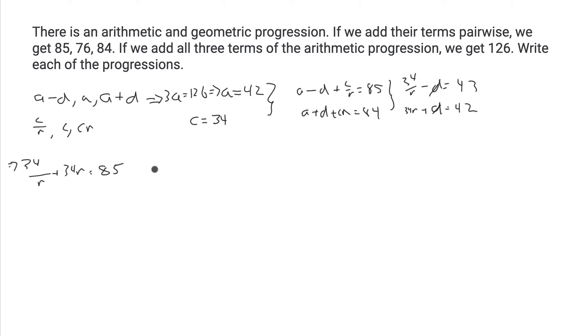You can multiply by r and rearrange to get 34r squared minus 85r plus 34 equals 0. Solving this, we get r equals 2 or 1 half. There's a kind of symmetry there, but for now let's just assume r is 2.